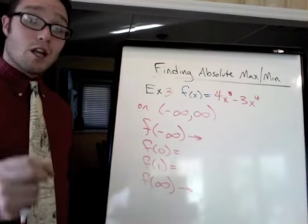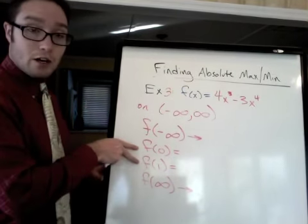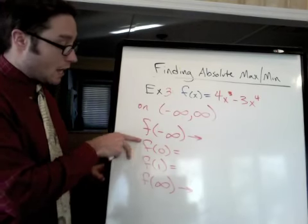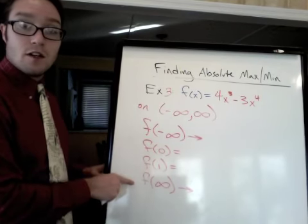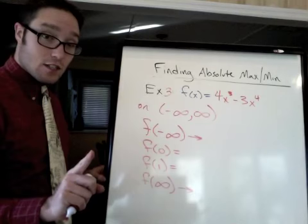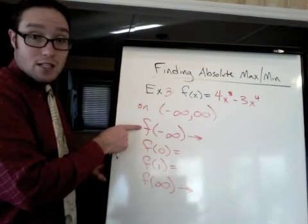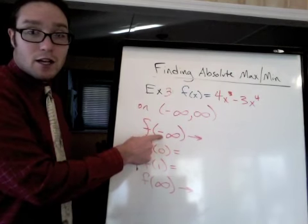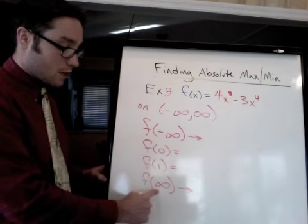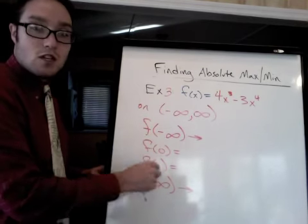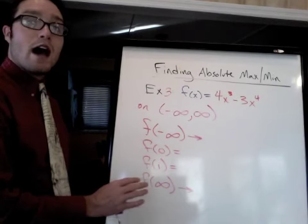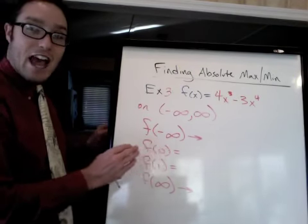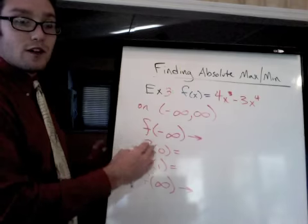So I'm ready to plug in my two stationary points, 0 and 1, and the endpoints of the interval. Now, this is a little tricky. What I'm really doing here is limits. I'm doing the limit as x approaches negative infinity because you can't plug in negative infinity. Same thing here. I'm doing a limit. So you need to do that so that you know how your graph is behaving at the ends of the interval. Negative infinity and positive infinity.